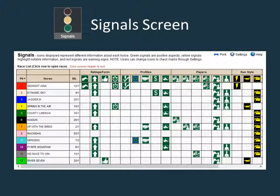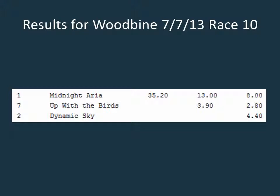The signal screen is a good place to look for additional clues on playing a lone front runner. Midnight Aria has lots of positive signals. With lone front runners, I especially look for a good workout icon, which Midnight Aria has in this instance, or a long shot icon or a bomber icon. Our next EquiGraphics video will cover tips on taking full advantage of the signal screen. Midnight Aria took advantage of the pace scenario and an all weather track with some moisture in it to prevail at a big price.